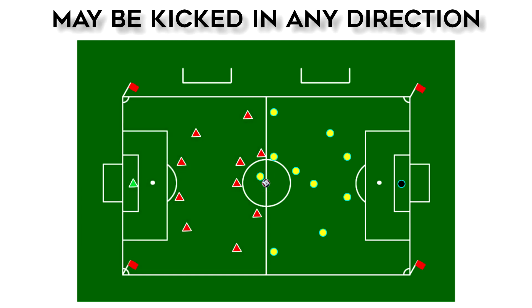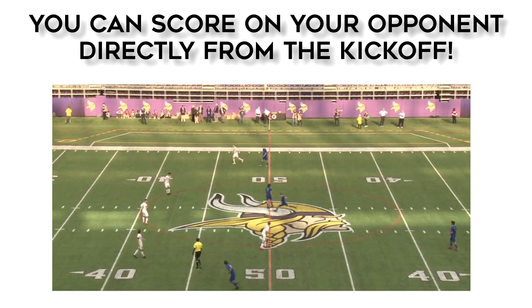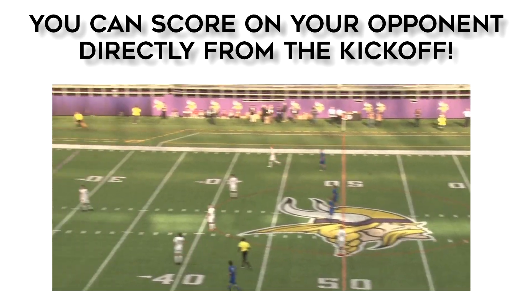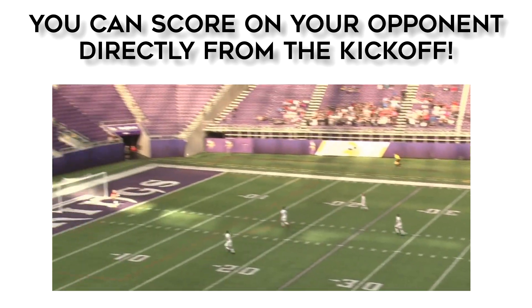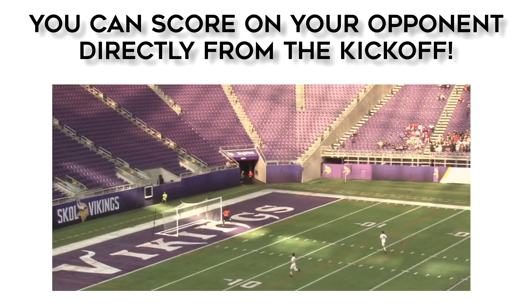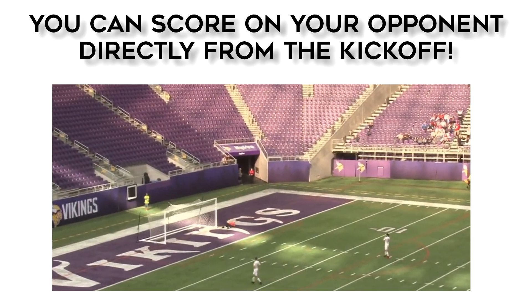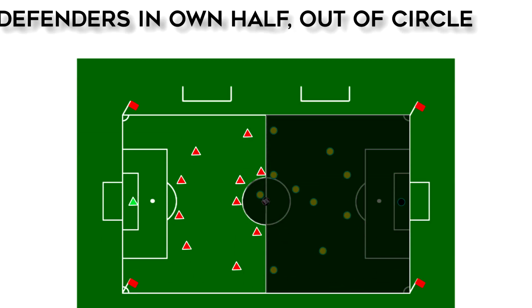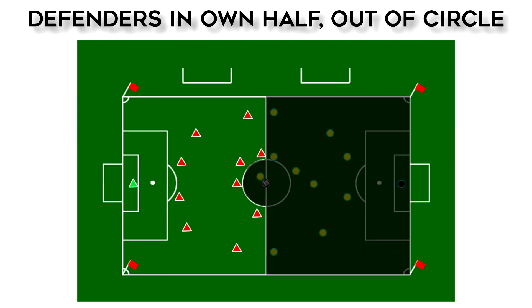The ball may be kicked in any direction, and in case you hadn't heard, we proved that last year in Minnesota in the Class A High School Boys Championship game — it can be kicked directly into the opponent's goal. Defending players must be all in their own half of the field and have to be outside of the center circle.